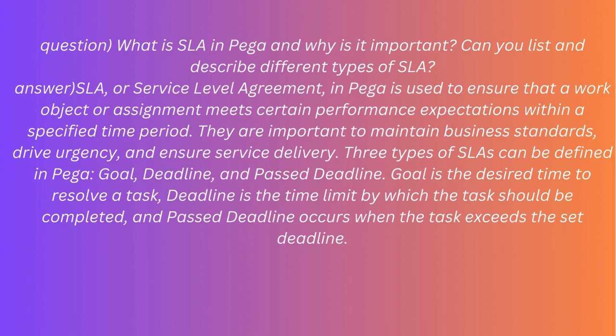Question: What is SLA in PEGA and why is it important? Can you list and describe different types of SLA? Answer: SLA, or Service Level Agreement, in PEGA is used to ensure that a work object or assignment meets certain performance expectations within a specified time period. They are important to maintain business standards, drive urgency, and ensure service delivery. Three types of SLAs can be defined in PEGA — Goal, Deadline, and Past Deadline. Goal is the desired time to resolve a task; Deadline is the time limit by which the task should be completed; and Past Deadline occurs when the task exceeds the set deadline.